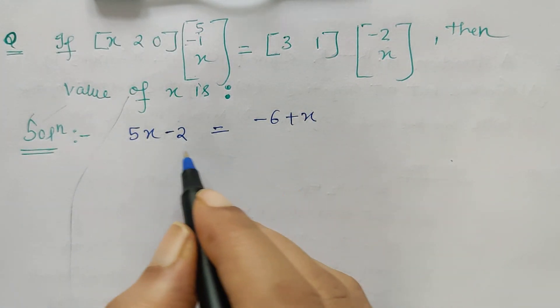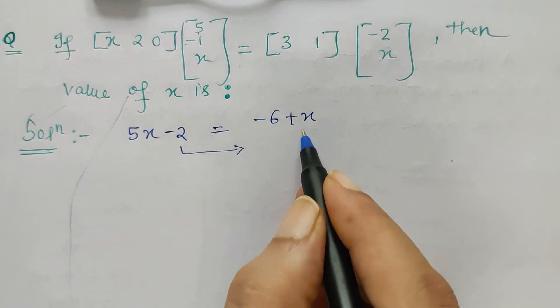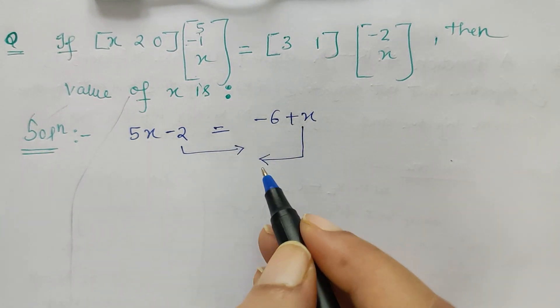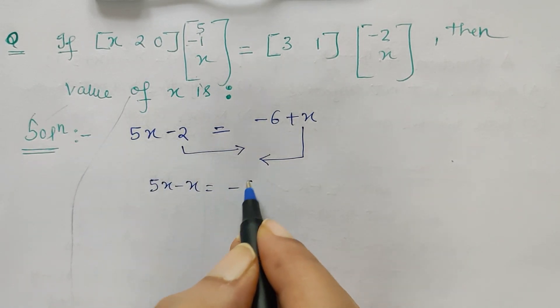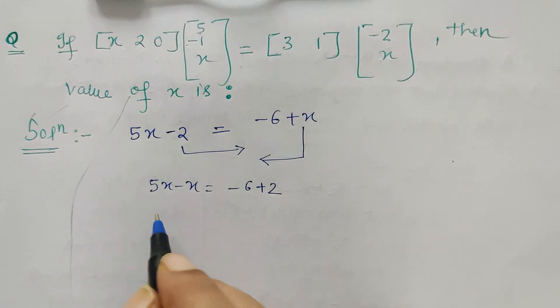As I am shifting minus 2 on the right hand side and x on the left hand side, so here I get 5x minus x is equal to minus 6 plus 2, which gives us 4x and minus 4.